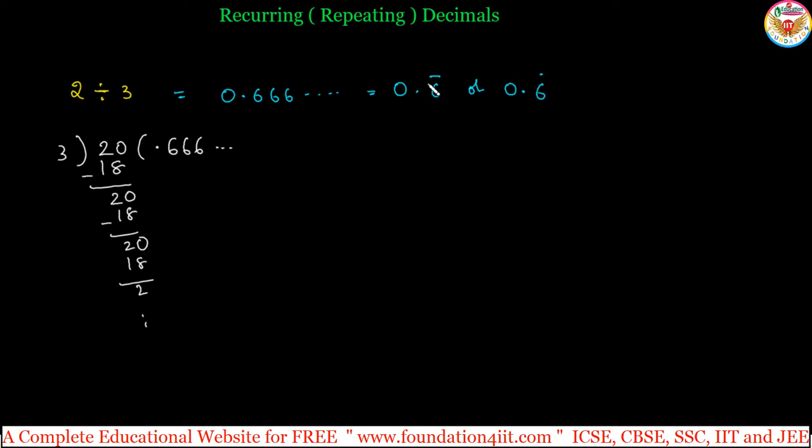The dot or bar shows that 6 repeated infinitely. Let us take one example: 15 divided by 22. If you do this calculation, you will get 0 point, I have done already, just I am showing the answer 6, 8, 1, 8, 1, and so on. So this 8, 1, 8, 1 will be repeated. Two digits are repeating in this.